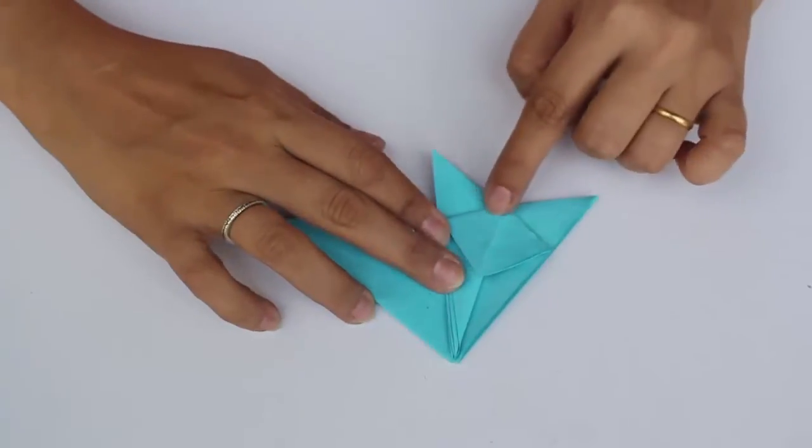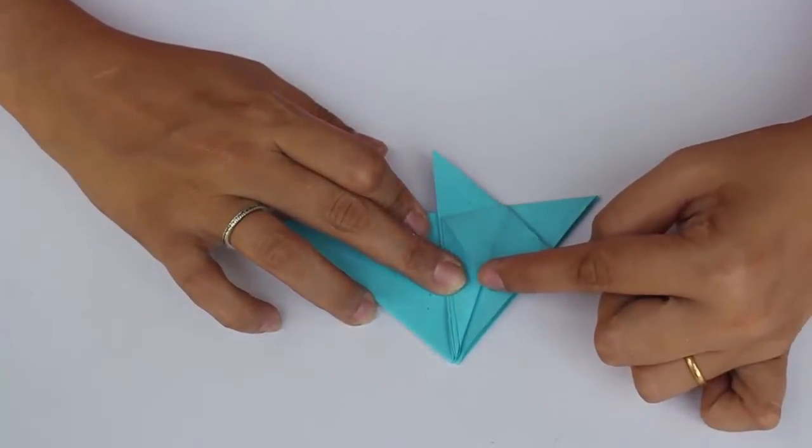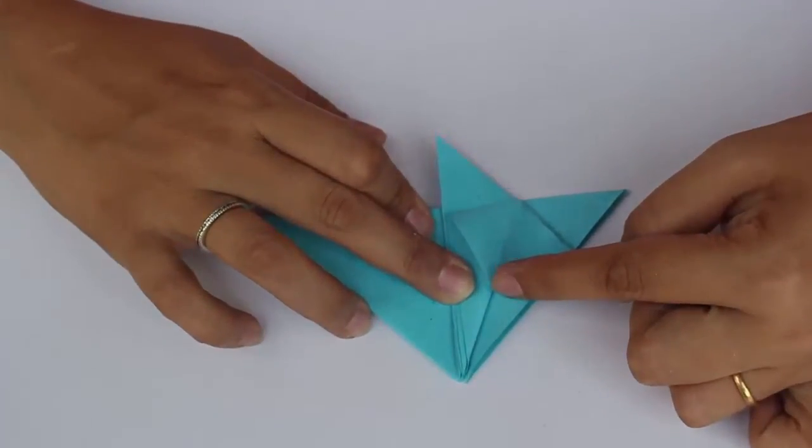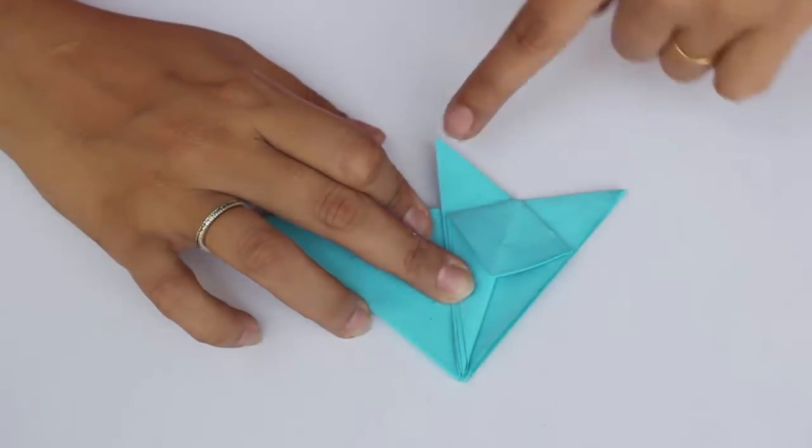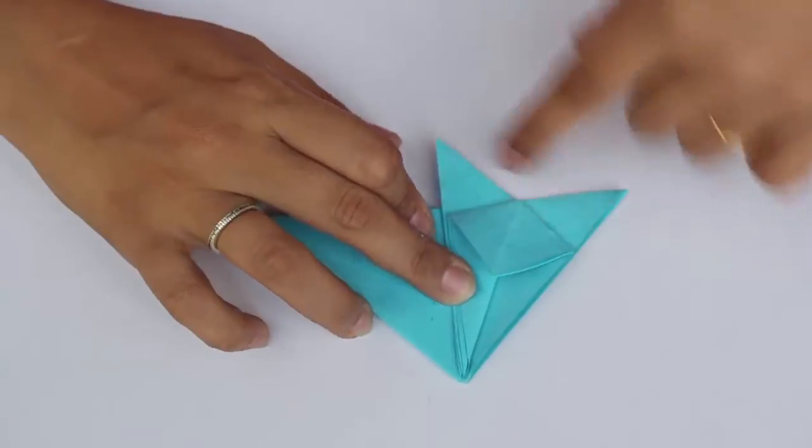Now this is an interesting quadrilateral. The tip over here would be like the chin of your cat. These would be the ears of your cat.